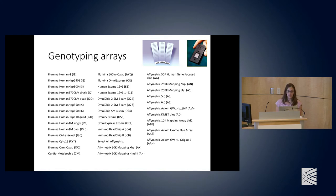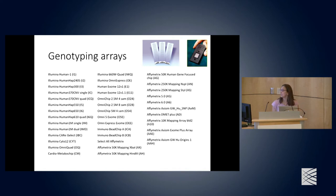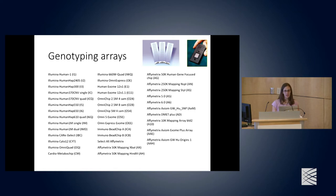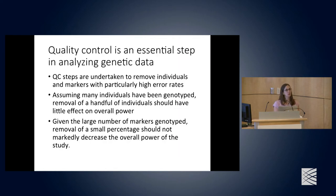There are over 40 different genotyping arrays developed over the past 10 years from Illumina and Affymetrix, and it's important to keep in mind which genotyping array will be best for your study. After deciding on your phenotype and receiving your genotyping data, the next step is to perform quality control.